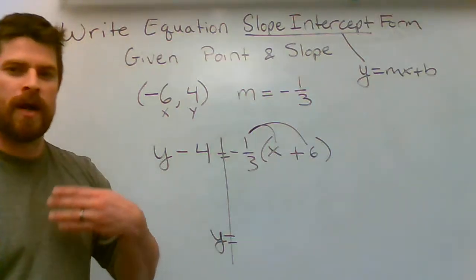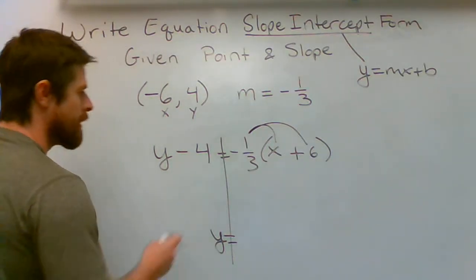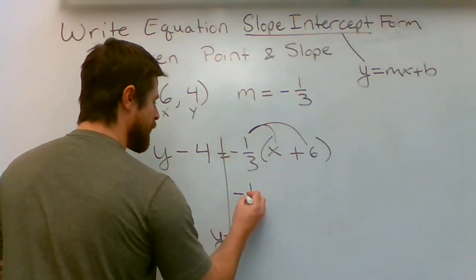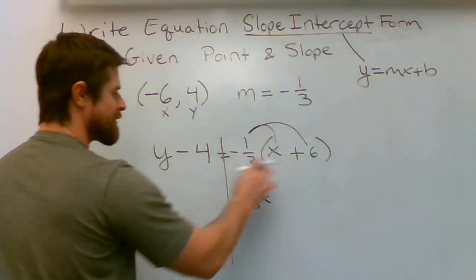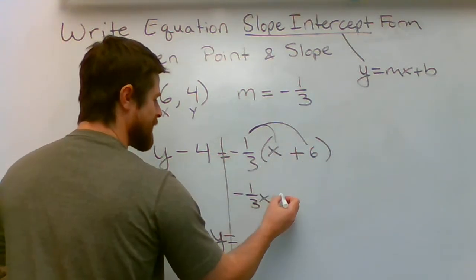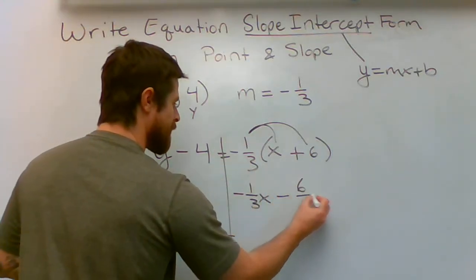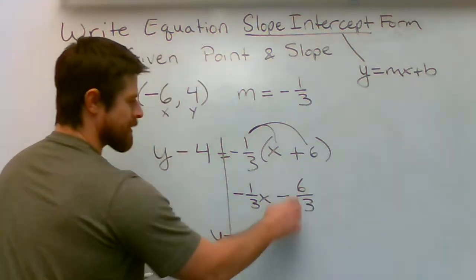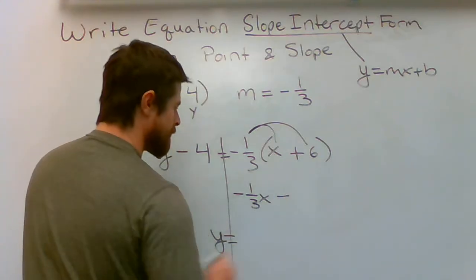That's right, we're going back to all those properties you've learned in the past. Everything's a stepping stone in math. Negative one-third times X. That's simple. It's negative one-third X. Negative one-third times positive six. Negative times a positive is a negative. Negative one-third times six is going to be six-thirds. That's an ugly way to look at that number. Six-thirds is really just a two. So we're going to write it down as a two.